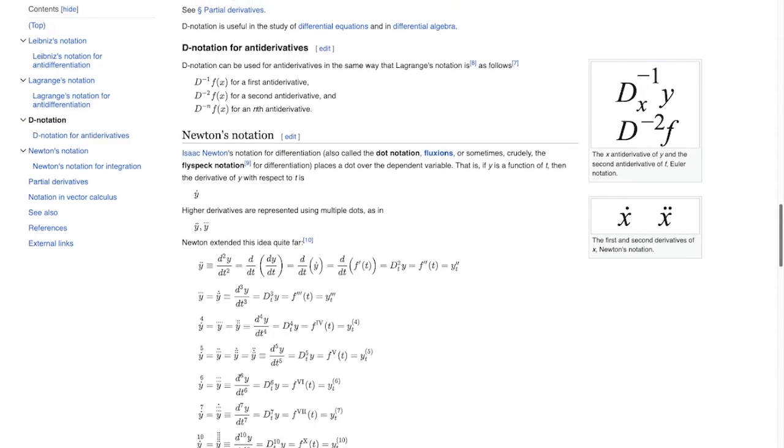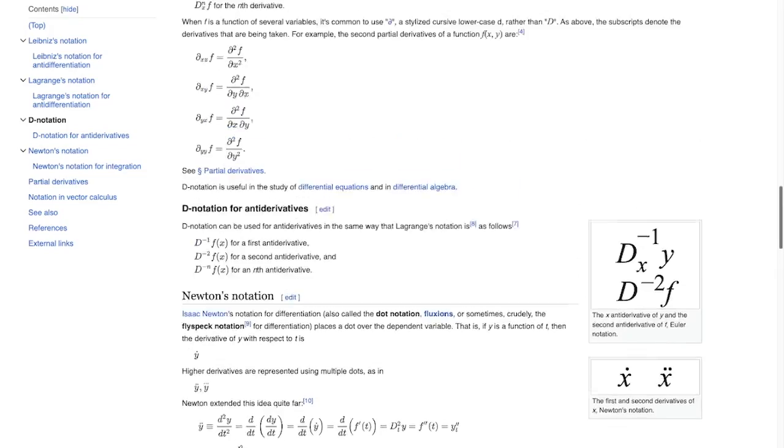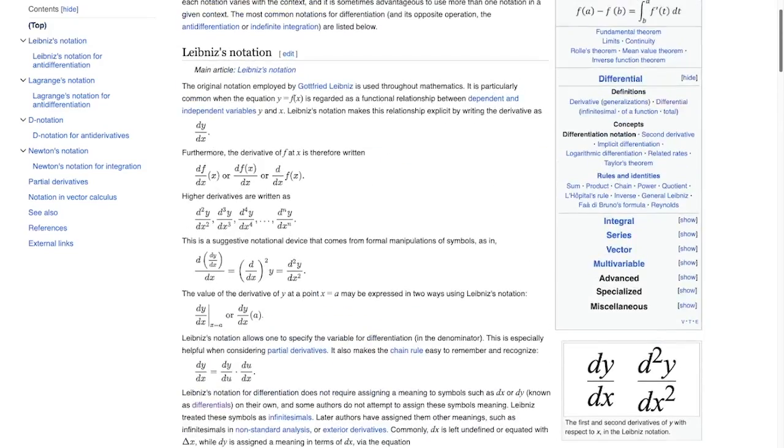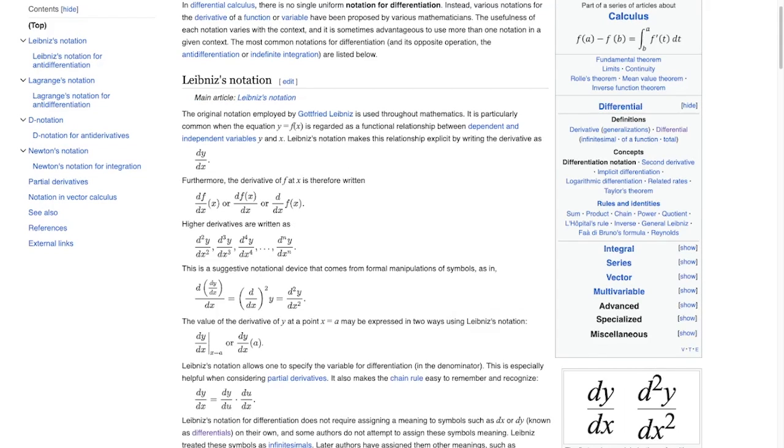One of the drawbacks is you can't really explicitly see what the derivative is with respect to. So are those derivatives with respect to t, time, or something else? And that's an advantage of Leibniz's notation which explicitly tells you what variable you're taking a derivative with respect to.